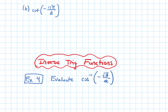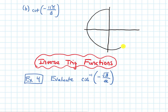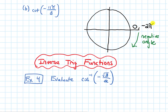Part B asks for cotangent of negative 11π over 3. Let's draw the unit circle — negative angles are measured clockwise. Going one full time around brings us to negative 2π, which equals negative 6π over 3. We need to reach negative 11π over 3, so we go further. Each additional π over 3, or 60 degrees clockwise, takes us to negative 7π over 3, then negative 8π over 3.